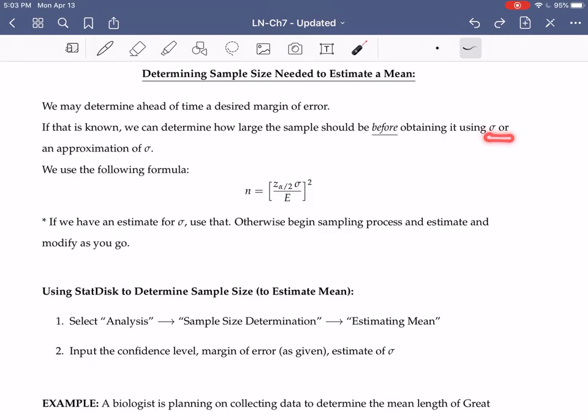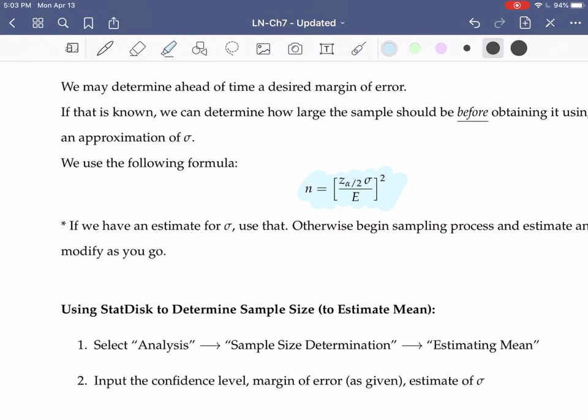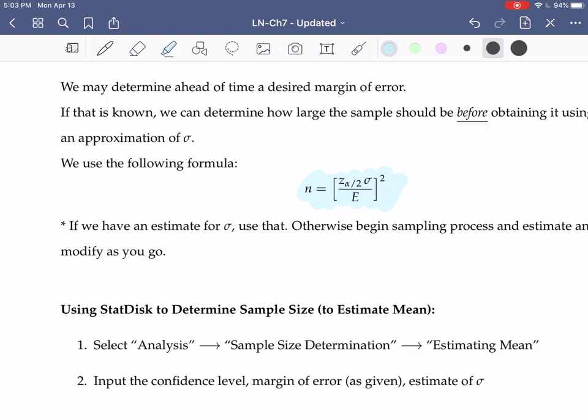We can either use sigma, the population standard deviation, or some approximation for that population standard deviation. Our formula for this is right here. We take this critical z value, multiply it by that population standard deviation, divide by the desired margin of error, and we square that.